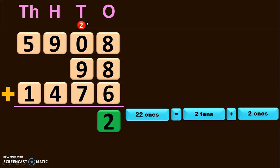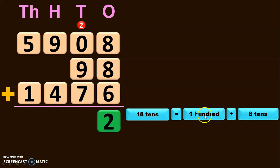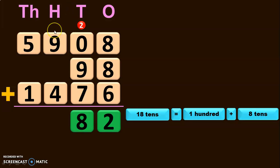Next, start the addition in the tens place. 2 plus 0 will give you 2. 2 plus 9 will give you 11, and 11 plus 7 will give you 18. So you will have 18 tens. You will have to regroup 18 tens. 18 tens is 180, which is nothing but 1 hundred plus 8 tens. So retain the 8 in the tens place and take the 1 as a carryover to the hundreds place.